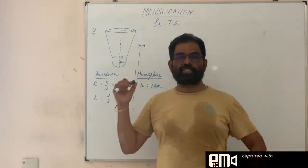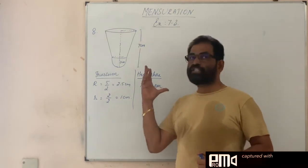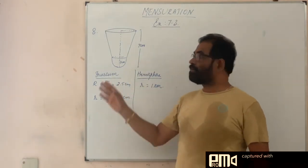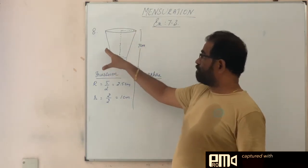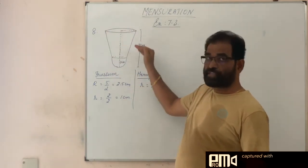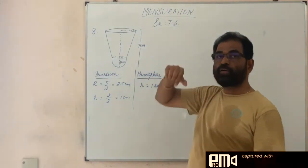Good morning students. Exercise 7.3, question number 8. See the question. A shuttle clock is in this shape. What is the shape here? Frustum of a cone. The upper part is frustum of a cone. This is surmounted on a hemisphere.